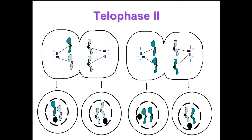We have now finished meiosis two. If this were occurring in the ovary, each one of these cells could in theory become an egg. If this were in the testicle, each one of these four cells could become a sperm.